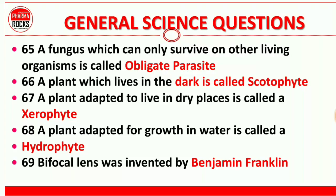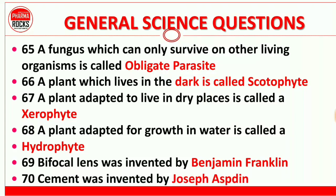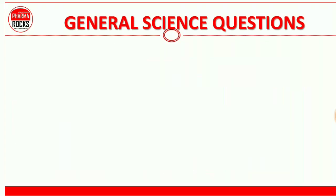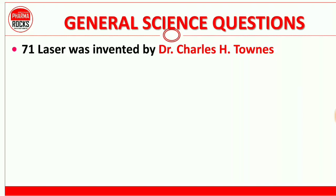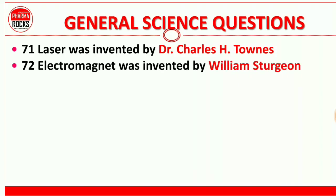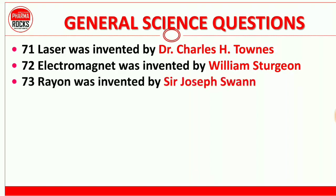Question 69: Bifocal lens was invented by Benjamin Franklin. Question 70: Cement was invented by Joseph Aspdin. Question 71: Laser was invented by Dr. Charles H. Townes. Question 72: Electromagnet was invented by William Sturgeon. Question 73: Rayon was invented by Sir Joseph Swan.